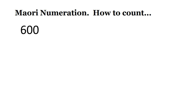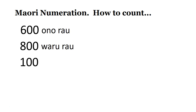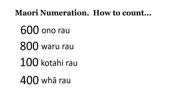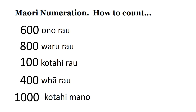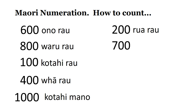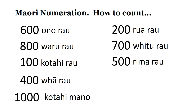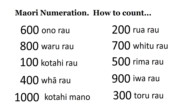Okay, let's try that again in a different order. 600 — ono rau. 800 — waru rau. 100 — kotahi rau. 400 — whā rau. 1000 — kotahi mano. 200 — rua rau. 700 — fitu rau. 500 — rima rau. 900 — iwa rau. 300 — toru rau.